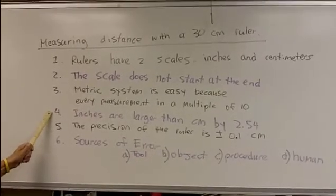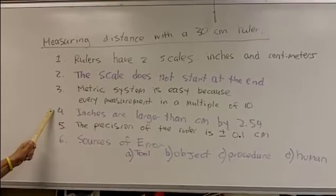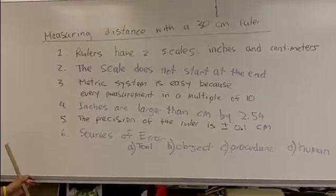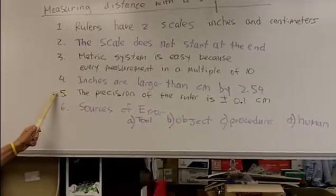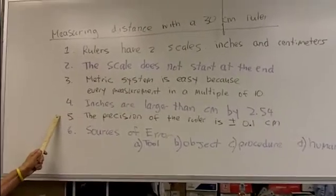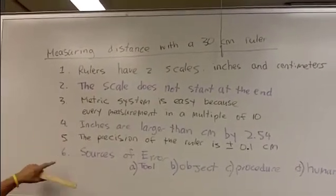Number four, inches are larger than centimeters by 2.54. Number five, the precision of the ruler is plus minus 0.1 centimeters.